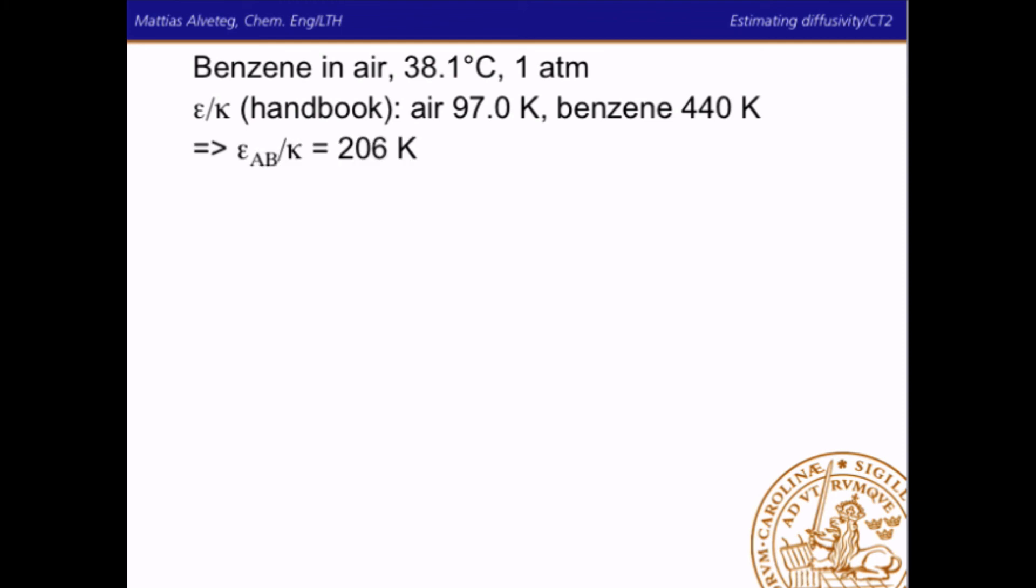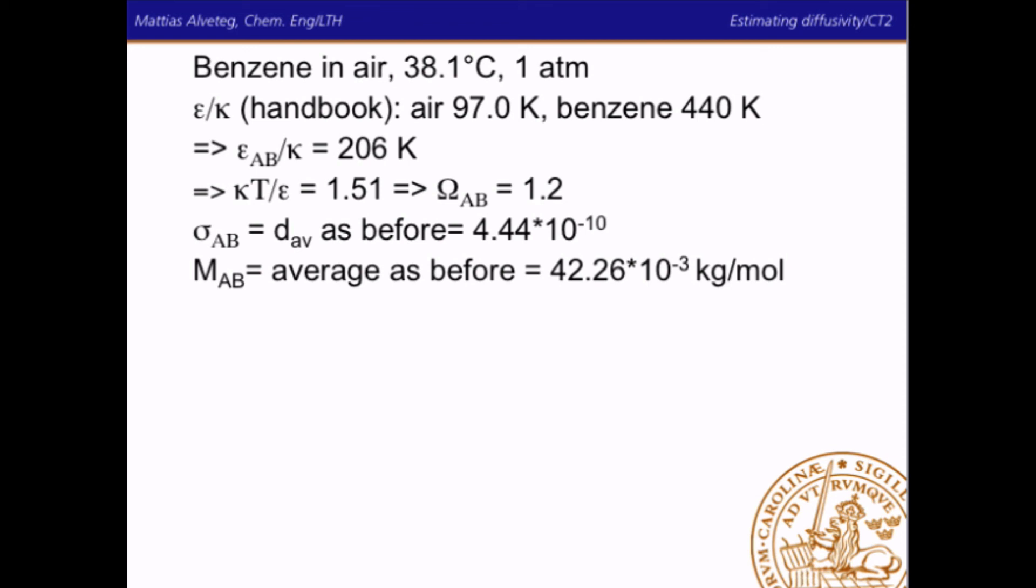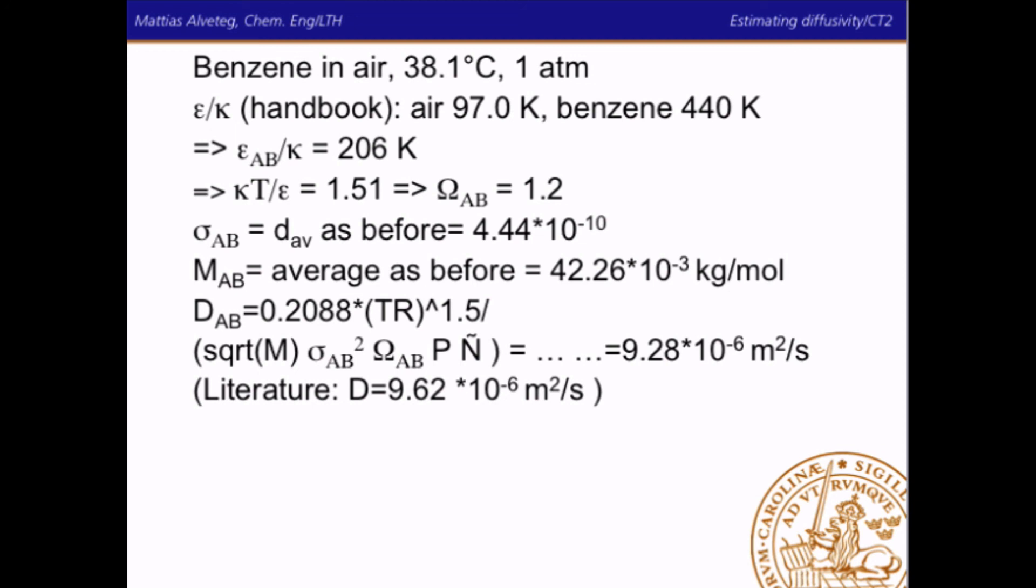Okay, time to do our example again. Benzene in air, 38.1 degrees Celsius and 1 atmosphere. We have the characteristic energy given in the handbook as 97 kelvin for air and benzene 440 kelvin and we get an average epsilon divided by kappa as 206 kelvin. And we can calculate the dimensionless temperature as 1.51 and read the correction factor from the diagram as 1.2. The collision diameter as before, 4.44 angstrom. The molar mass as before, 42.26 times 10 to the power minus 3 kg per mole, remember SI units. And we stuff that into the equation and get 9.28 times 10 to the power minus 6 square meter per second. And the literature says 9.62, so that's fairly good.